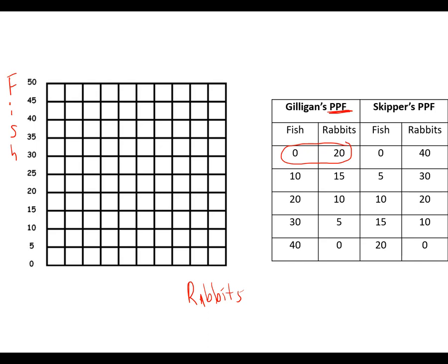Let's do this first point for Gilligan. When Gilligan doesn't catch any fish, he's zero on the fish axis, he can catch 20 rabbits. If he chooses to spend some of his time catching fish, he can catch 10 fish and 15 rabbits. The next one is 20 fish and 10 on the rabbit axis, then 30 fish and 5 rabbits, and finally 40 fish and no rabbits. So we'll connect the dots there.